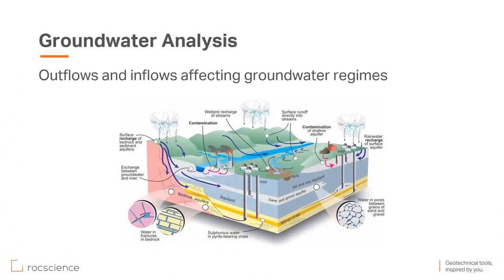Schematically illustrated here, you can see all the outflows and inflows affecting the groundwater regime in the domain. We have rainfall, flow over the surface going to the river, interaction between the river and soil layers, and infiltration going to the ground layers. We have different bedrock layers, aquifers, aquitards, and waters being pumped in and out of the domain. All these phenomena can be simulated and modeled properly and accurately in RS3.